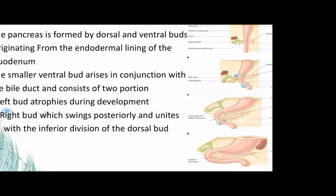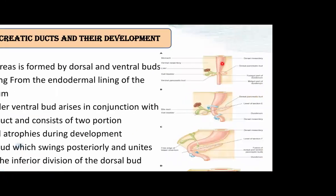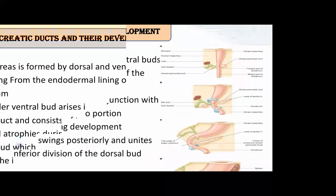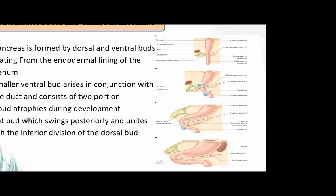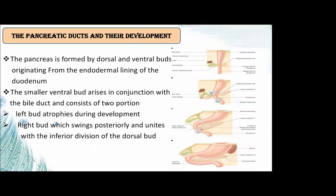Regarding the pancreatic ducts and their development: the pancreas arises from a larger dorsal pancreatic bud and a ventral pancreatic bud. The left ventral pancreatic bud undergoes atrophy during development. The right ventral pancreatic bud rotates and unites with the inferior portion of the dorsal pancreatic bud to form the lower part of the head and uncinate process.